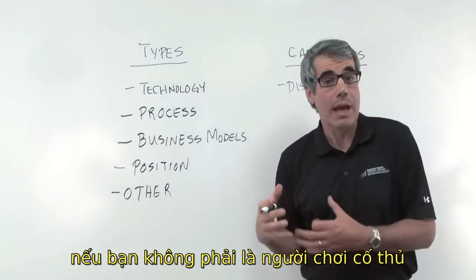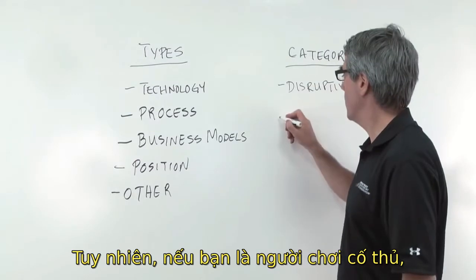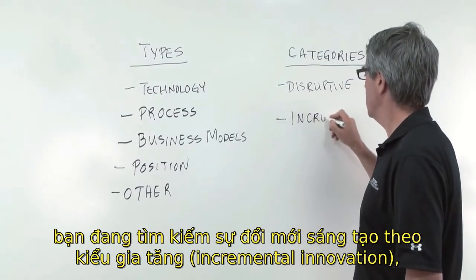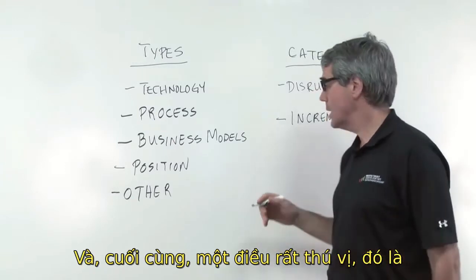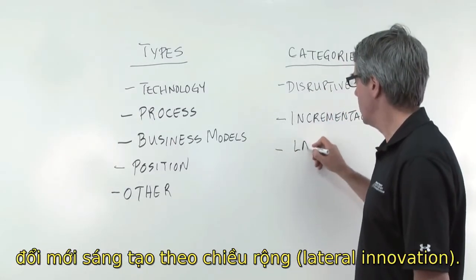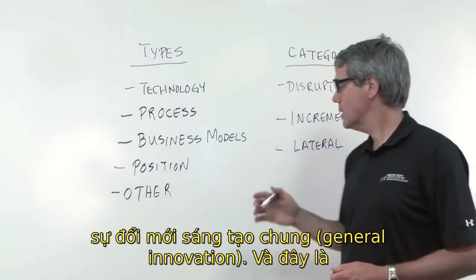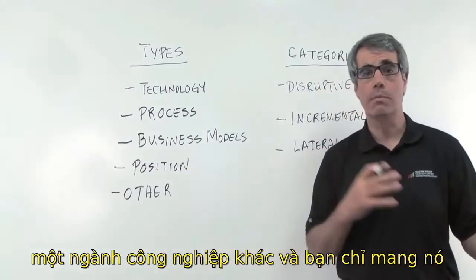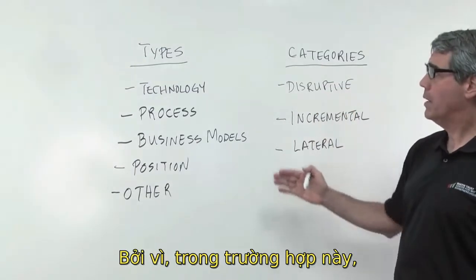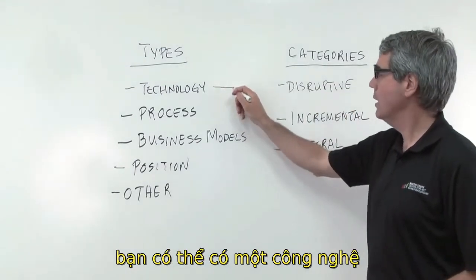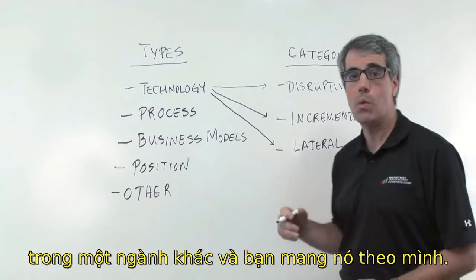Disruptive can be a very good thing if you're not the entrenched player — if you're the new player in the market, you want disruptive. However, if you're the entrenched player, you're looking for incremental innovation that says this is 10% better, 20% better. The last one is what we'll call lateral innovation, or what Stefan Tomke at Harvard calls general innovation. This is something that was an innovation you saw in another industry and you're just bringing it back into your industry.